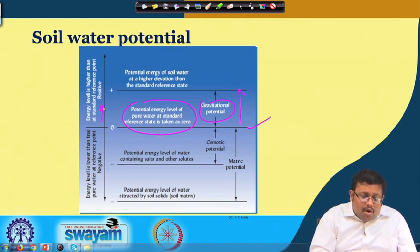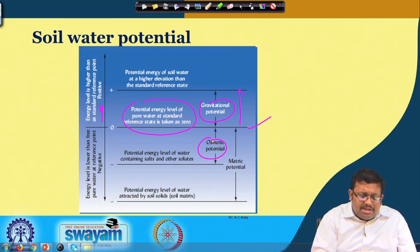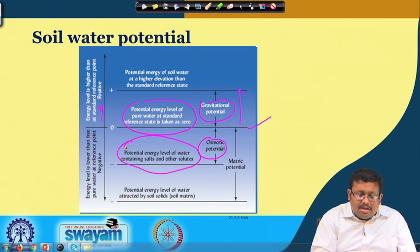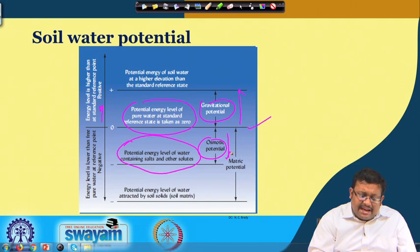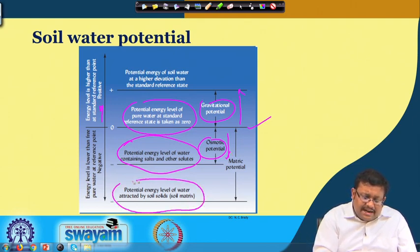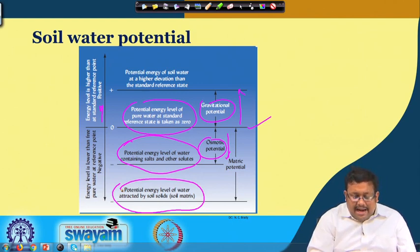Below the reference state there will be osmotic potential — the potential energy level of water containing salts and other solutes. The energy level is lower than that of free pure water at the reference point, so it is negative in sign. Finally, the potential energy level of water attracted by soil solids or the soil matrix is called matric potential, which is also negative.